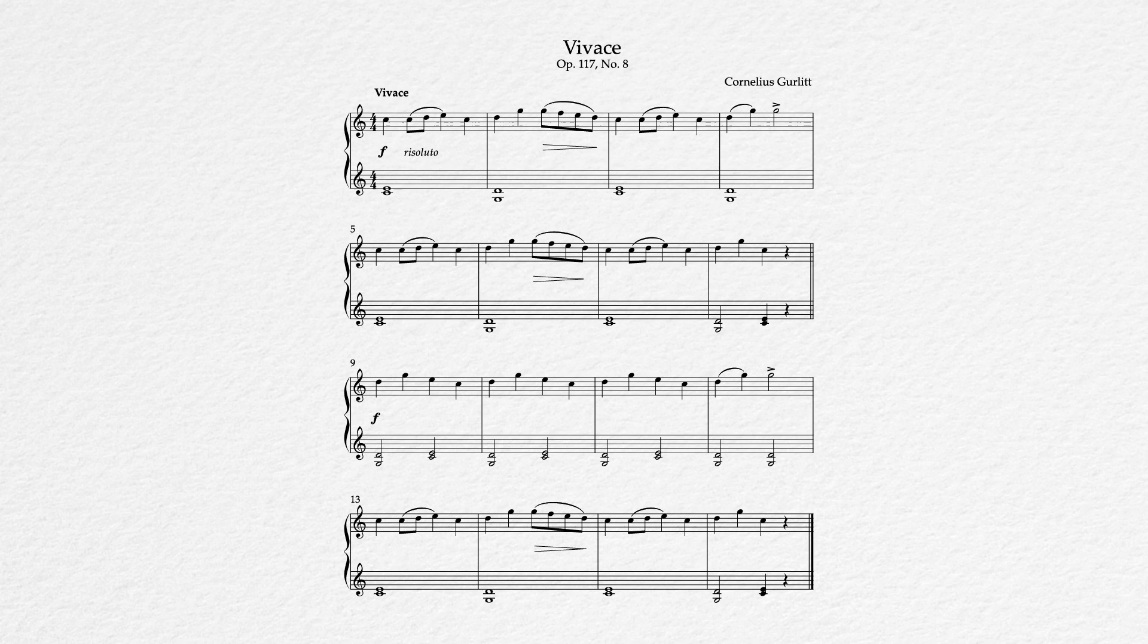One thing that's hopefully getting easier for you to see at this point are the repetitions. We have an A, A prime, B, A prime form happening here, but check out how measures 1 through 3, 5 through 7, and 13 through 15 are all exactly the same in both the right hand and the left hand. And boy, if you can see that and think of those three measures really in terms of just copying and pasting, this becomes much easier indeed.